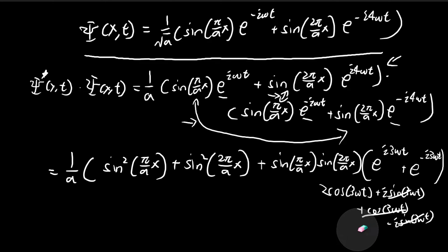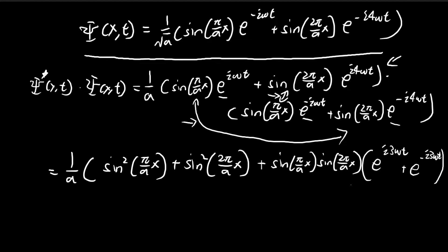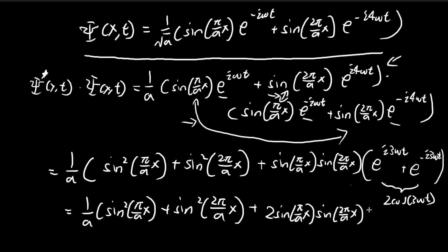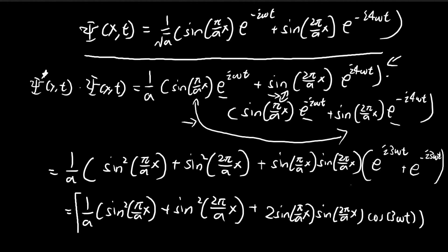Combining everything, we get the final expression: (1/a) times [sine²(pi x/a) plus sine²(2pi x/a) plus 2 sine(pi x/a) sine(2pi x/a) cosine(3 omega t)]. This is a pretty long answer, but in terms of quantum mechanics it's actually quite nice — most of the time you can't even solve the Schrödinger equation. This is your complete answer to part B.